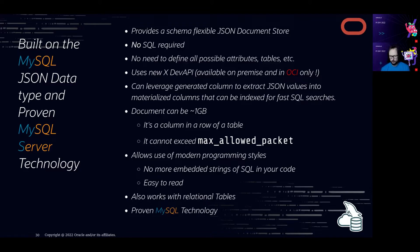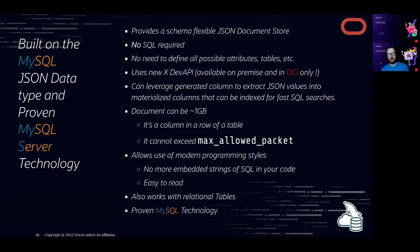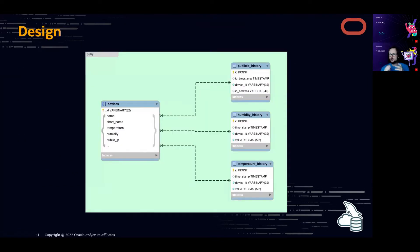It uses the new X DevAPI, available on-premise and also natively in OCI — other cloud providers often don't support the X Protocol. You can have all the columns you want and do searches on them. The document store lets you store up to 1 gigabyte per document — not 16 megabytes like some other document stores. You can use modern CRUD programming and mix relational tables and NoSQL JSON documents together.